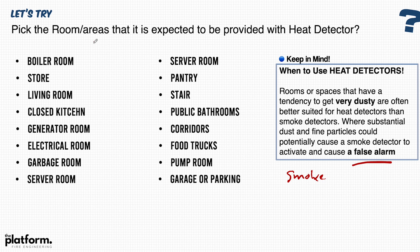The UAE Fire Life Safety Code of Practice, Chapter 8, clearly identifies which rooms and applications should use a heat detector. These special or auxiliary rooms include: boiler rooms — where there is a chance of smoke being generated, so a heat detector is better to avoid false alarms; store rooms and living rooms, which are normal areas; and closed kitchens, where we absolutely need to install a heat detector to avoid false alarms.